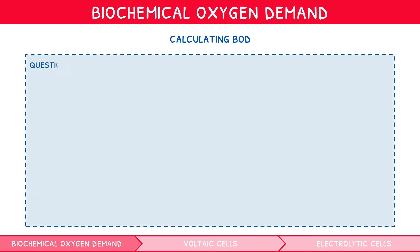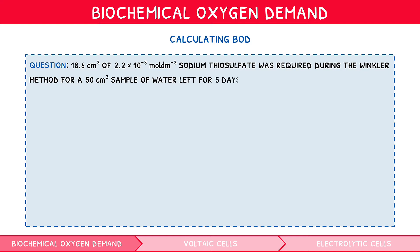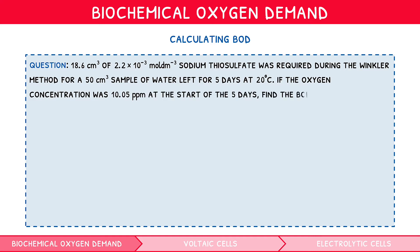Let's work through a sample question. 18.6 cm³ of 2.2 × 10⁻³ mol dm⁻³ sodium thiosulfate was required during the Winkler method for a 50 cm³ sample of water left for 5 days at 20°C. If the oxygen concentration was 10.05 parts per million at the start of the 5 days, find the BOD. Using the formula moles = concentration × volume, we calculate the moles of sodium thiosulfate as 4.092 × 10⁻⁵.